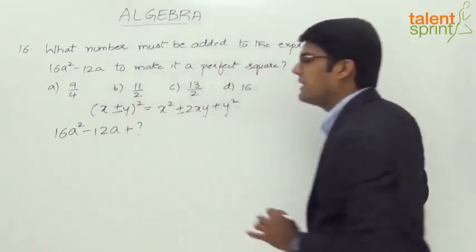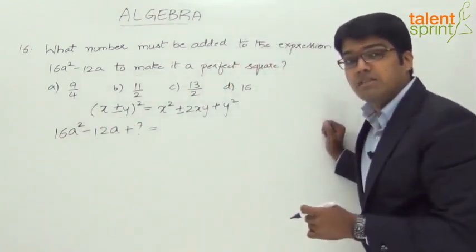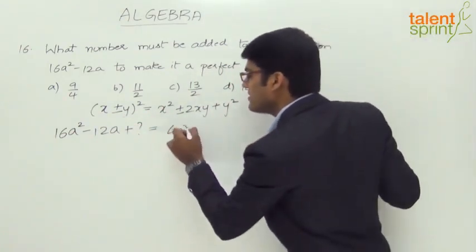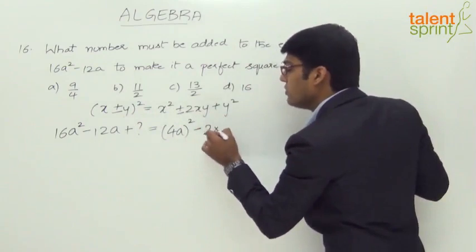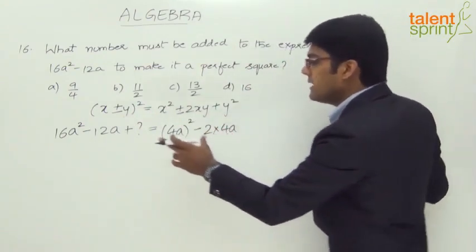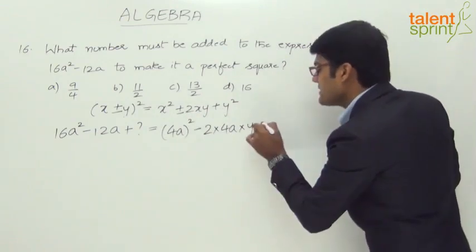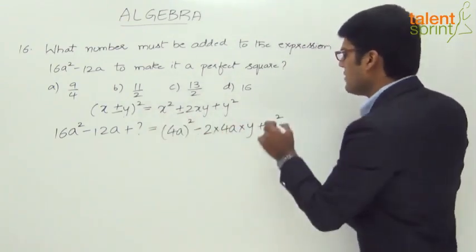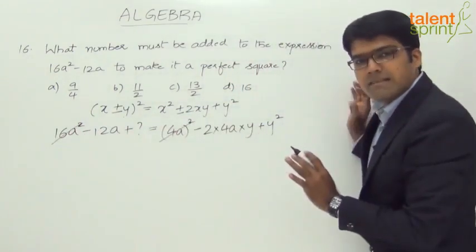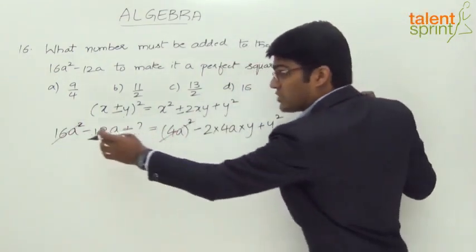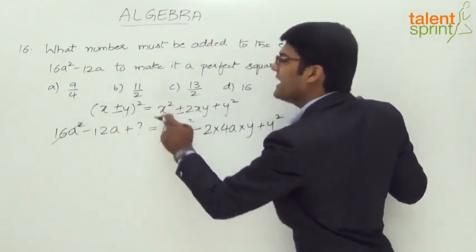There is some missing number which has to be added. Now, x² corresponds to 16a², so x = 4a, since (4a)² = 16a². Since the middle term is negative, we use the minus sign. So 2xy becomes 2 × 4a × y. Let's call the missing term y², which is the question mark here.